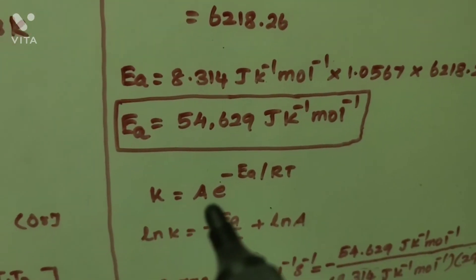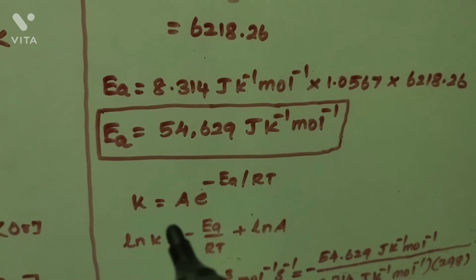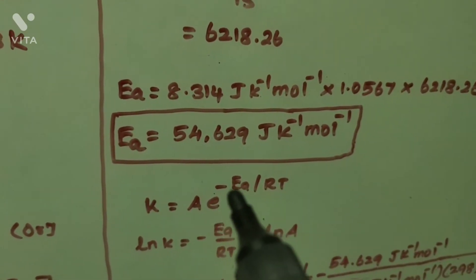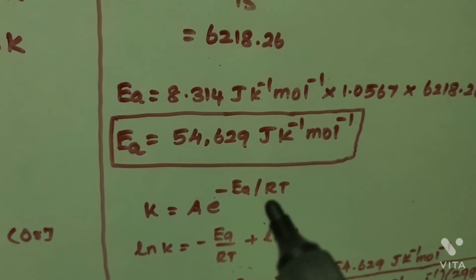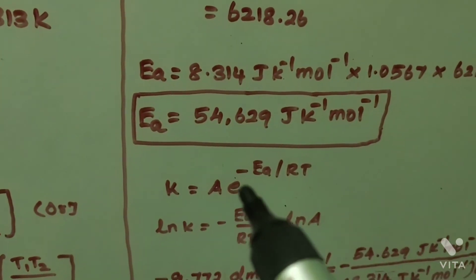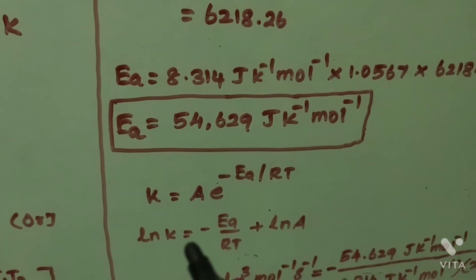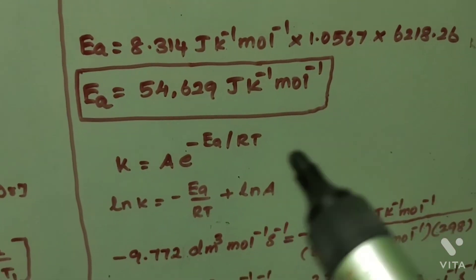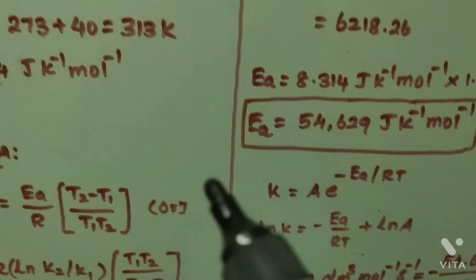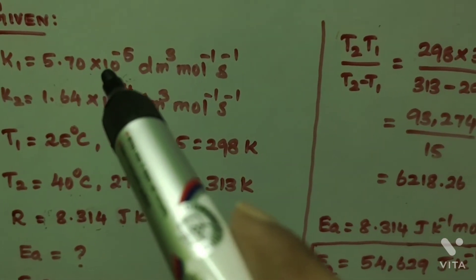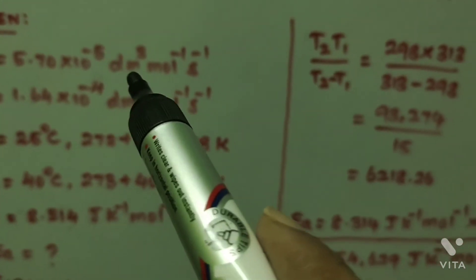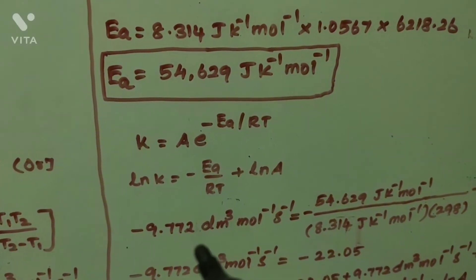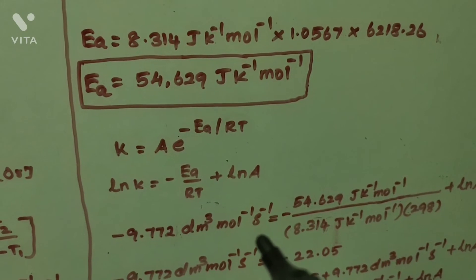Next, we calculate the Arrhenius pre-exponential factor A. We know the Arrhenius equation: K = A × e^(−Ea/RT). Taking the natural log: ln K = −Ea/(RT) + ln A. First, ln K1 = ln(5.70 × 10⁻⁵ dm³ mol⁻¹ s⁻¹) = −9.772 dm³ mol⁻¹ s⁻¹.